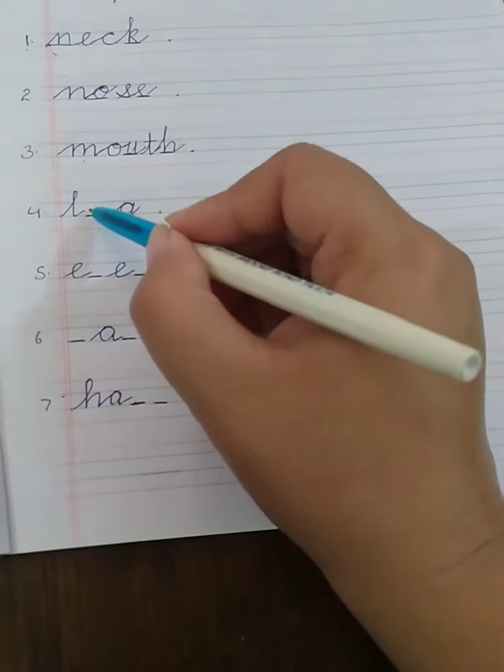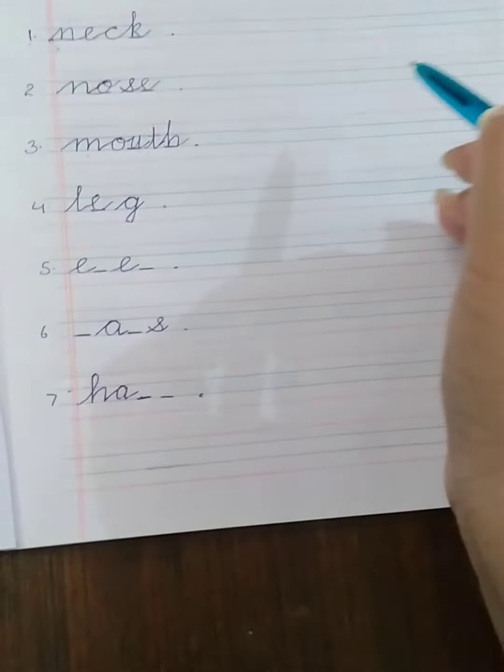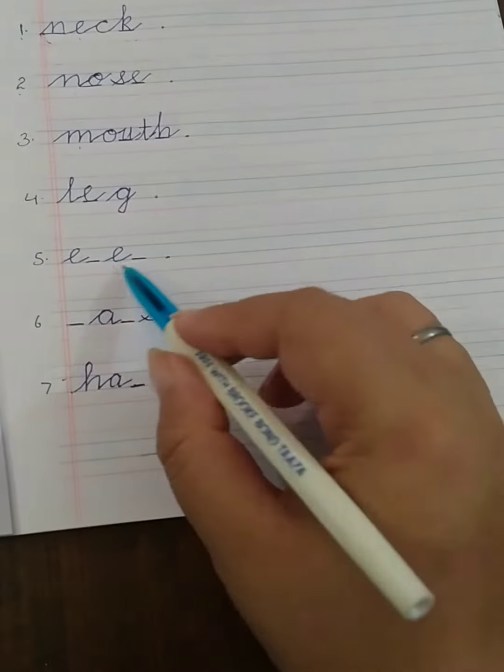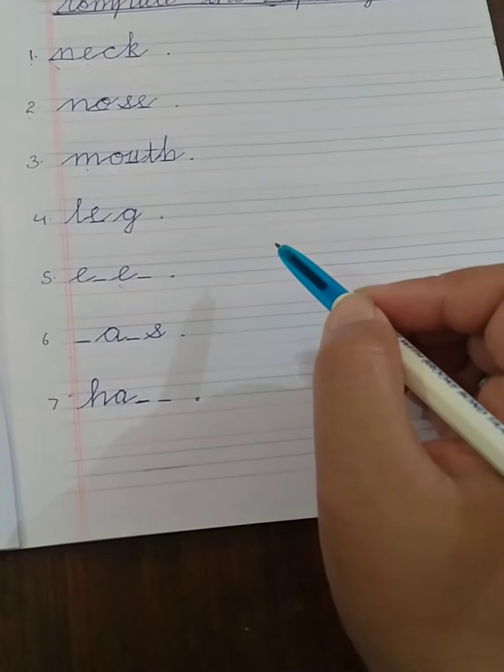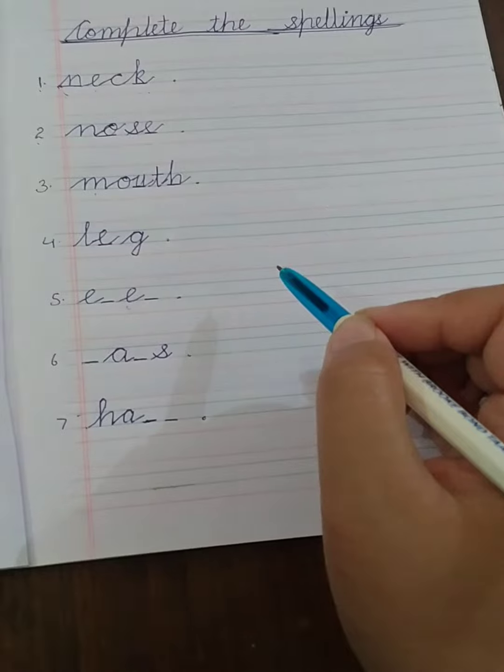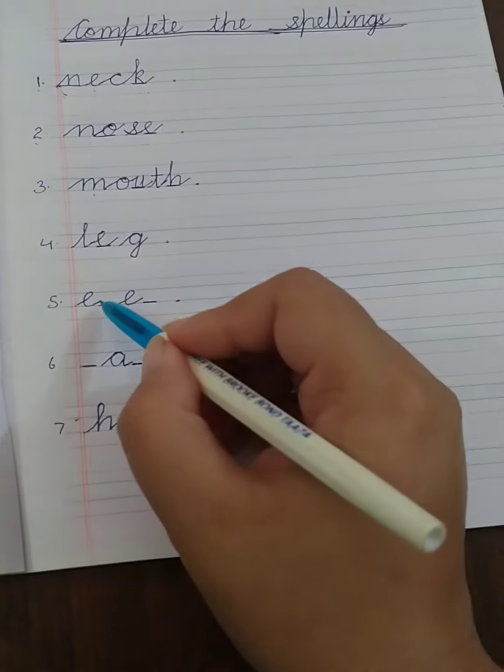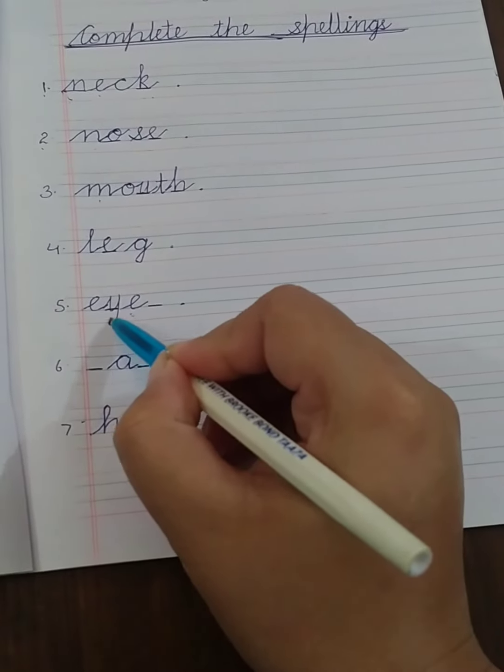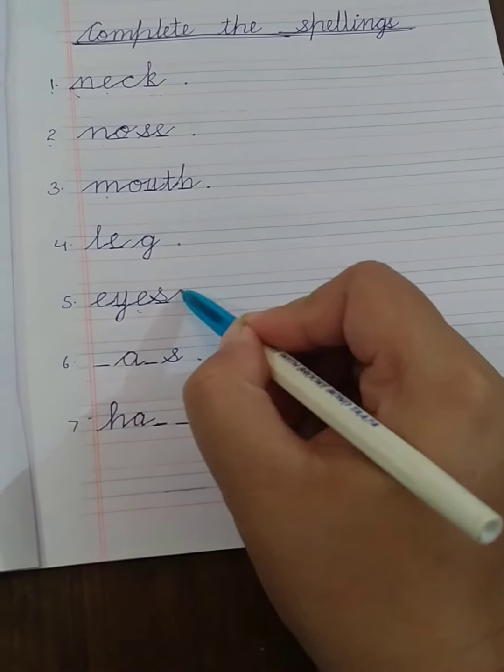Number 4 is L E G leg. And this E E is ears or eyes. This is eyes, E Y E S eyes.